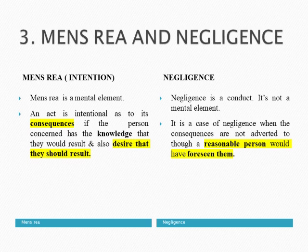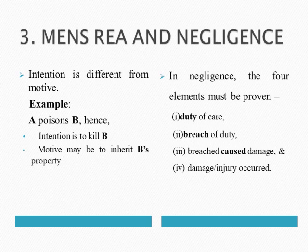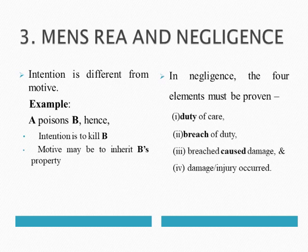In a negligence case, the defendant must fail to reach the standard of care that a reasonable person would take, and the failure to reach this standard of care must cause harm to the victim. Intention is different from motive — motive is the reason why a person has committed a crime. For example, A poisons B: the intention is to kill B, while the motive may be to inherit B's property. In negligence, four elements must be proven: duty of care by the defendant, breach of duty, breach of duty has caused damage, and damage or injury occurred to the plaintiff.